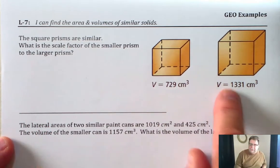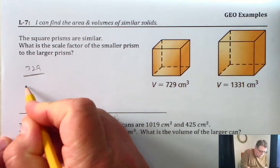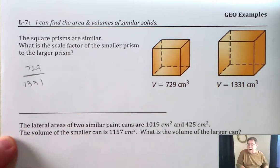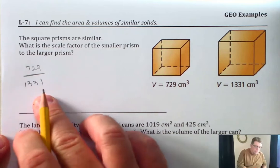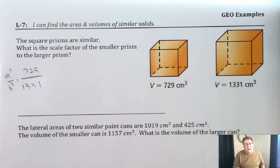Well, since we're looking at volumes, we'll compare one to the other. Let's go ahead and write 729 over 1331. However, that is a to the third over b to the third because that's what the volumes are.